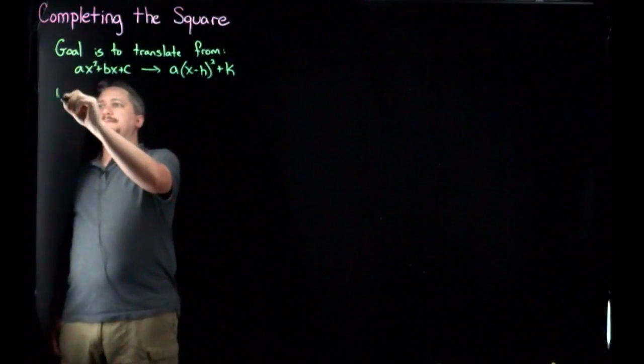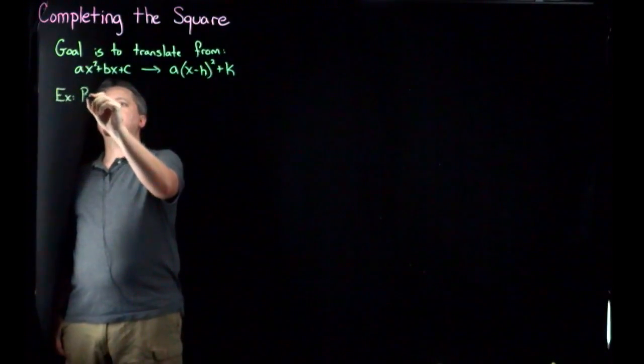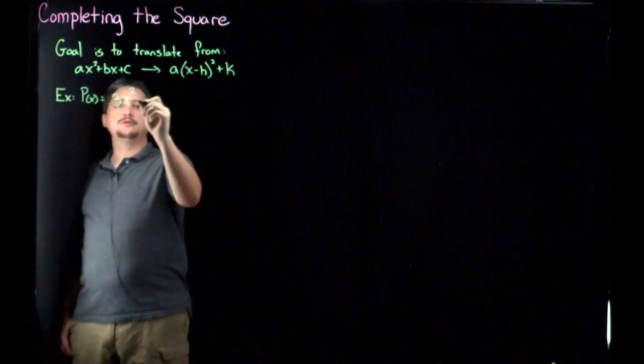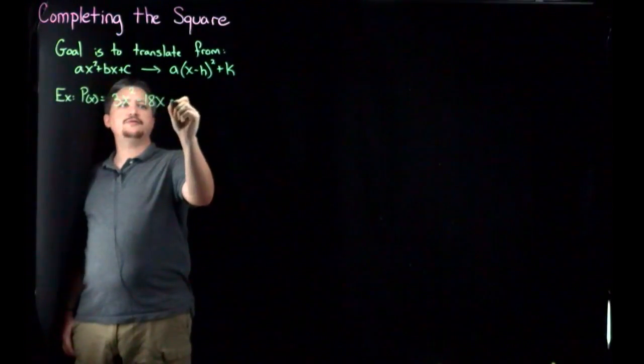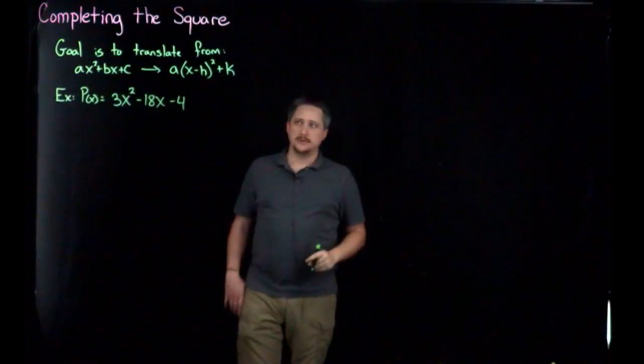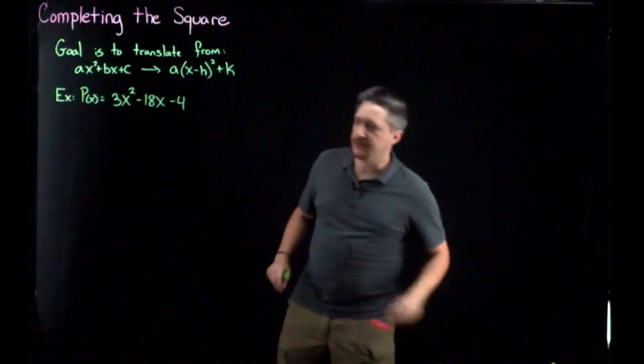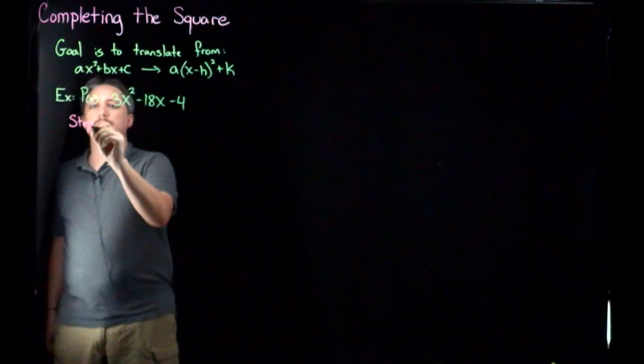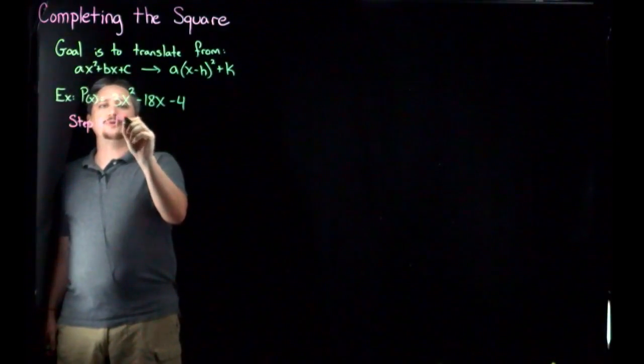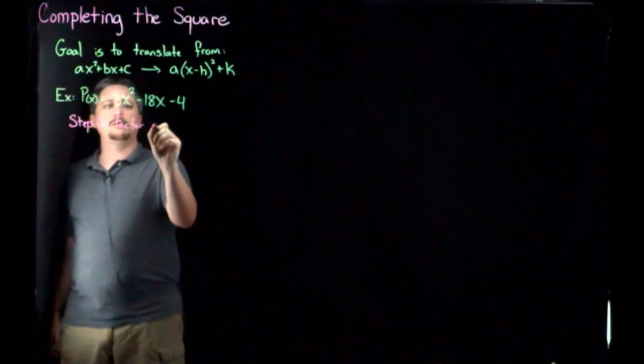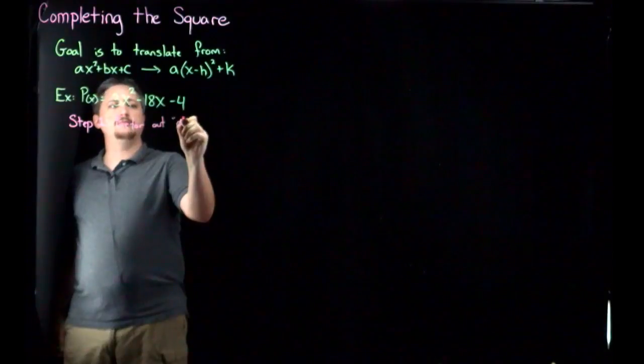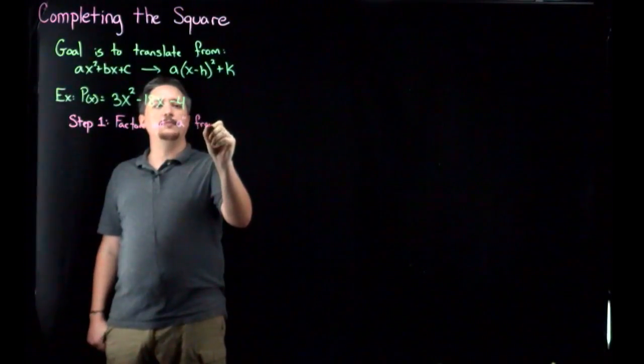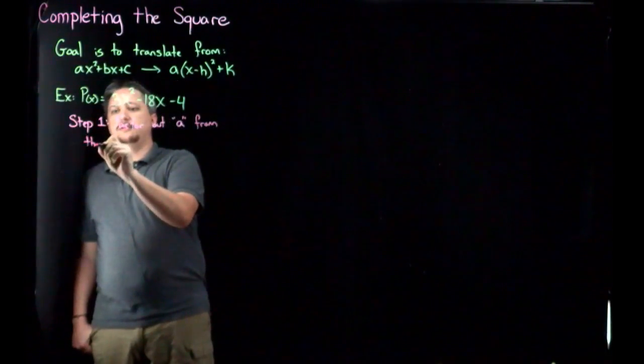So let's look at the example. P of x is 3x squared minus 18x minus 4. I was doing this in the other videos. It seemed to work out pretty well, so I'm going to write in a different color for the steps. So step one: Factor out the a term if it's not one. If it is one, we get to skip this step. But factor out the a term from the first two terms.